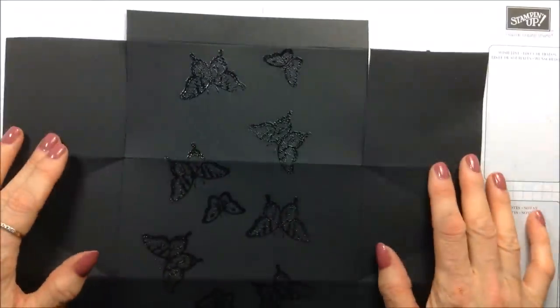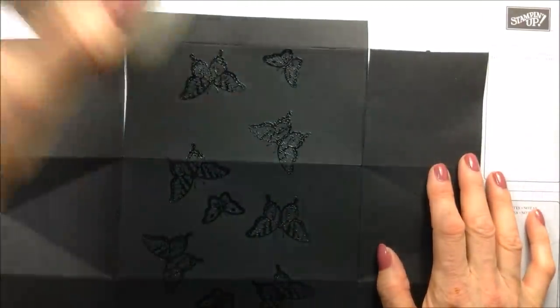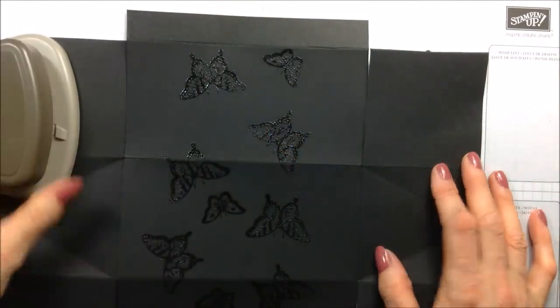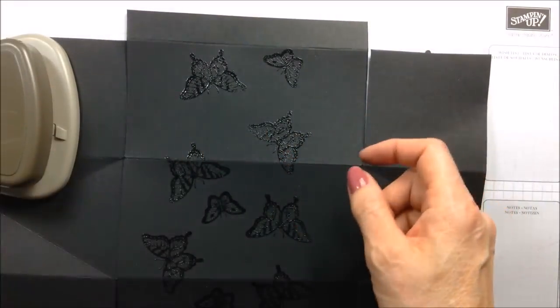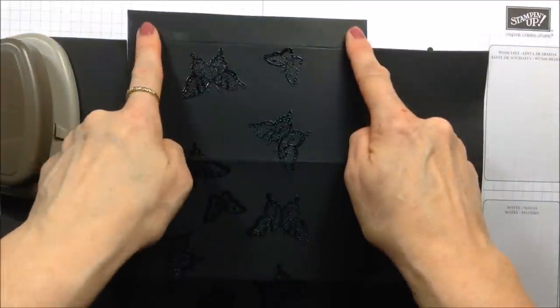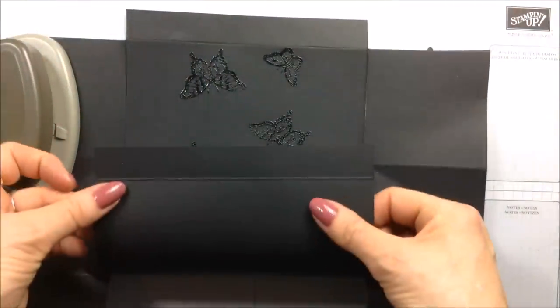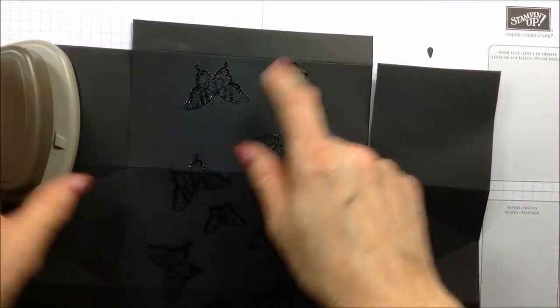Okay, and that's everything prepped now. This is where you're going to bring in, if you've got one, the curvy corner trio punch. I'm only going to be punching out two of these corners. You don't need to do all four, so I'm just going to do these two here.